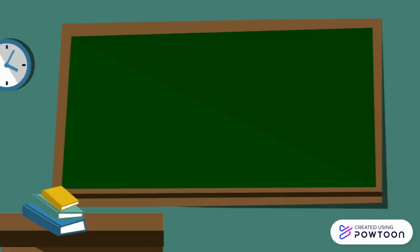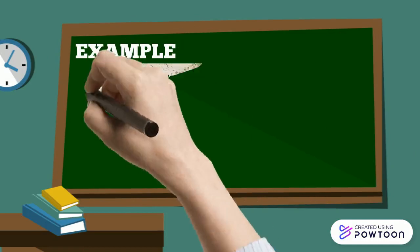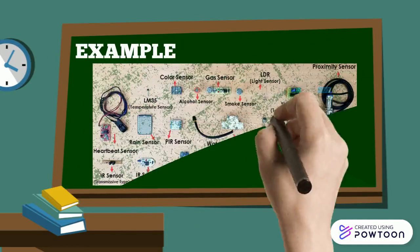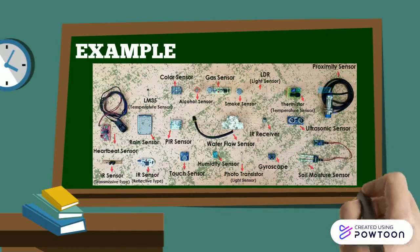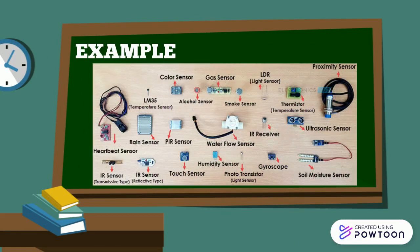These are examples of sensors which contribute to automation. The examples listed here include color sensors, gas sensors, PR sensors, drain sensors, and so on.